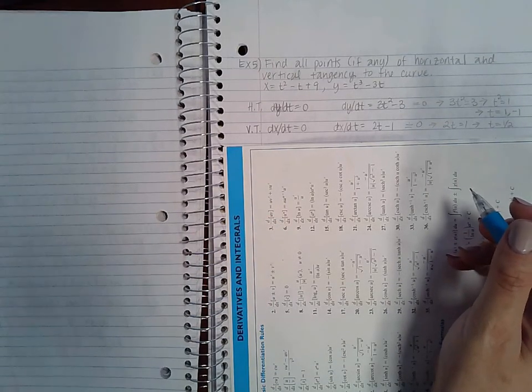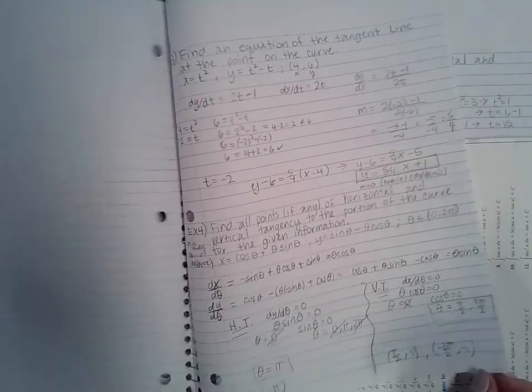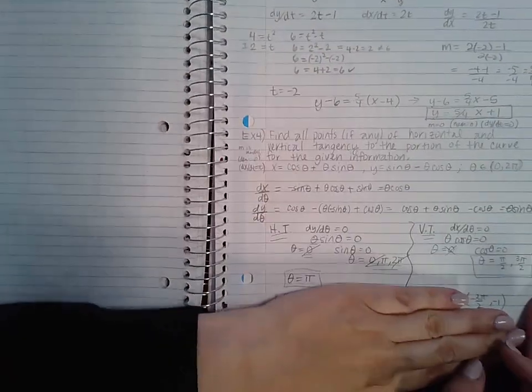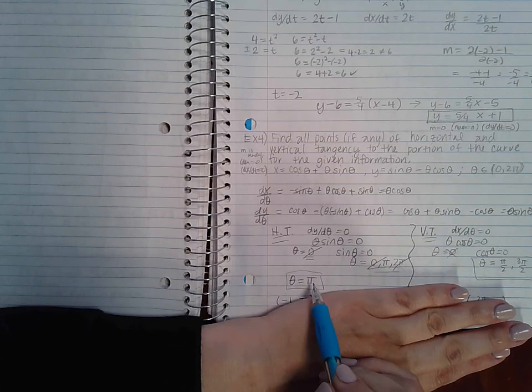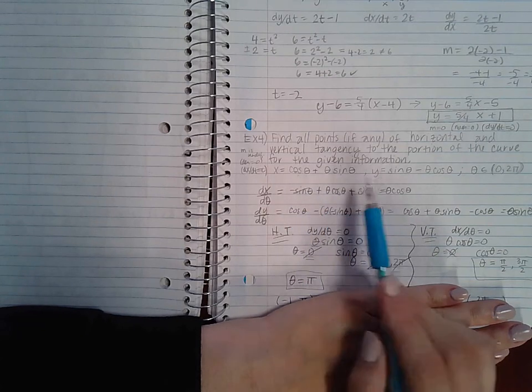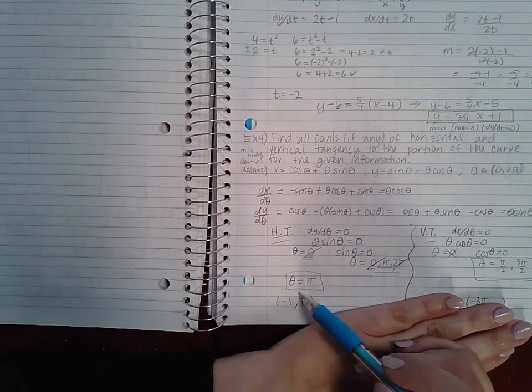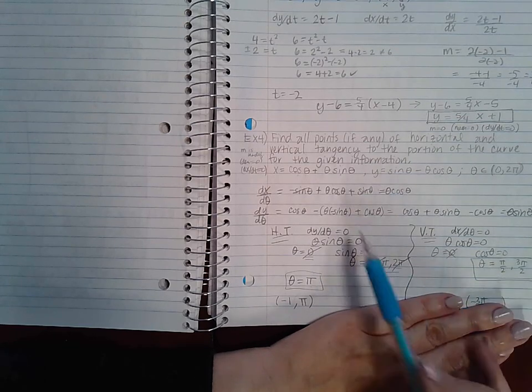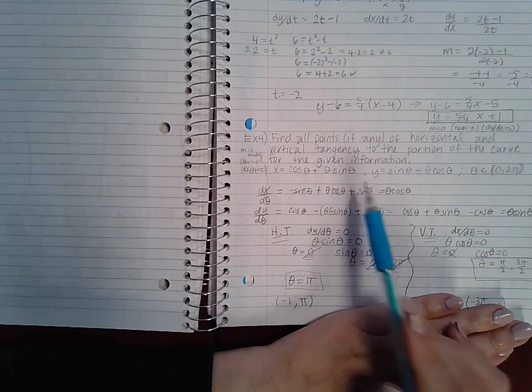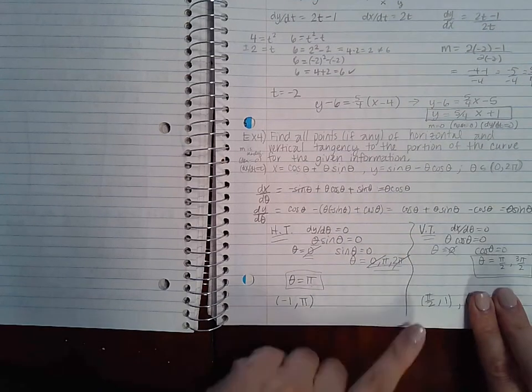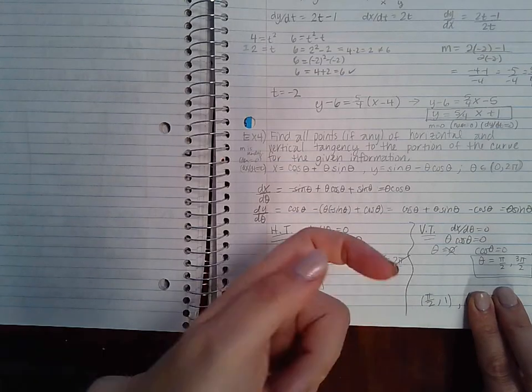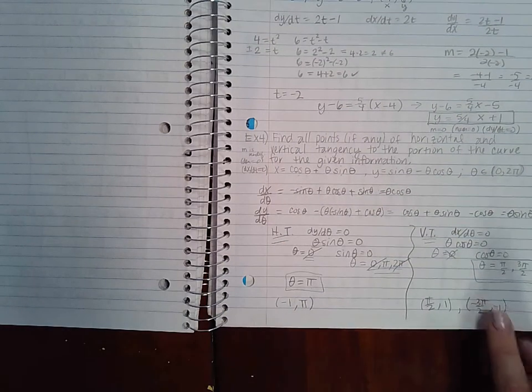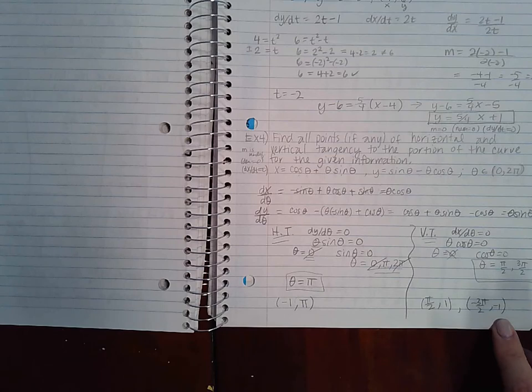So quickly if I go back to example 4, we found that theta equals pi. If I plug pi back in for x and y I end up with the point negative 1 comma pi. If I do the same for pi over 2 I get pi over 2 comma 1. For 3 pi over 2 I get negative 3 pi over 2 comma negative 1.